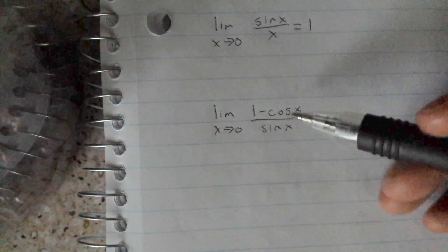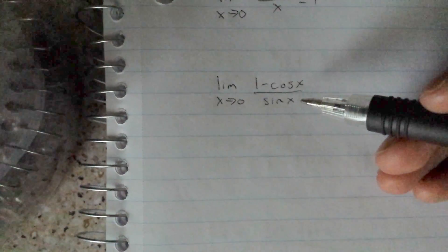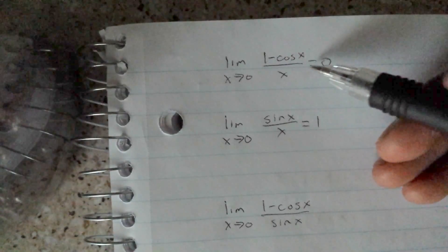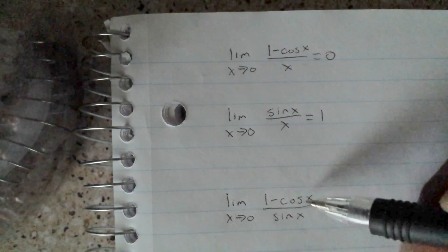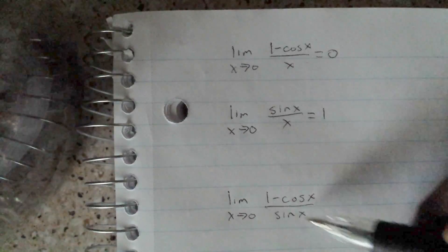We have limit as x approaches 0 of 1 minus cosine x over sine x. What we want to do is apply this property in a way that will work out. The easiest thing to do is just multiply the bottom by x. So let's rewrite it.